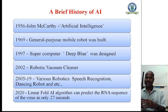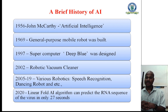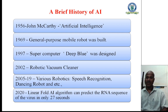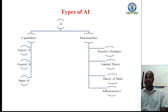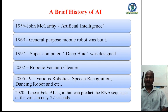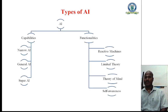From 2005 to 2019, various robotics developments including speech recognition and dancing robots were designed and introduced. In 2020, the LinearFold artificial intelligence algorithm could predict the RNA sequence of a virus in only 27 seconds. These are the brief history of artificial intelligence.